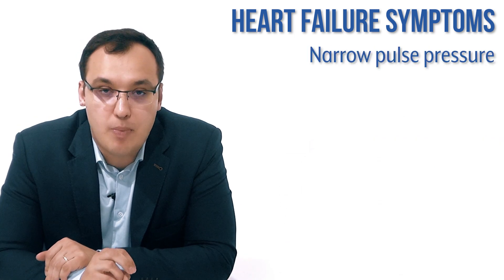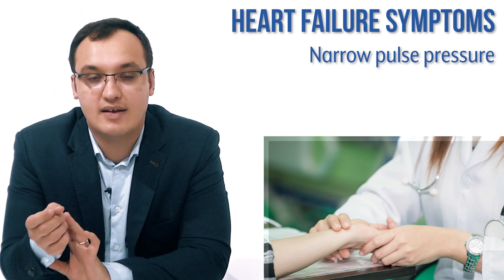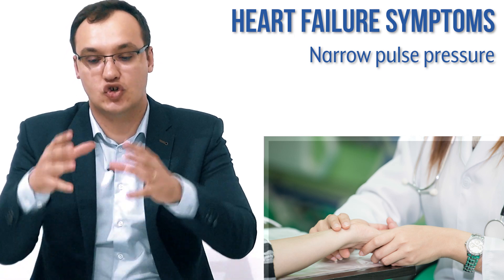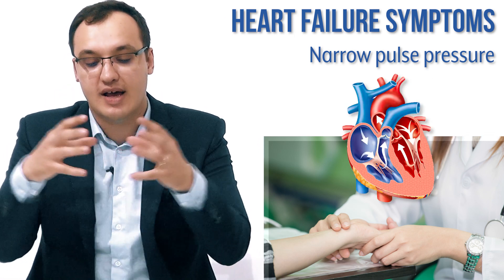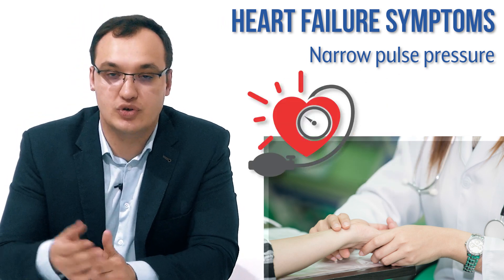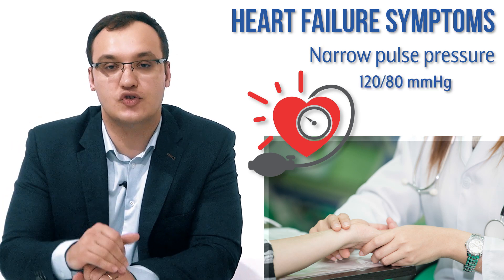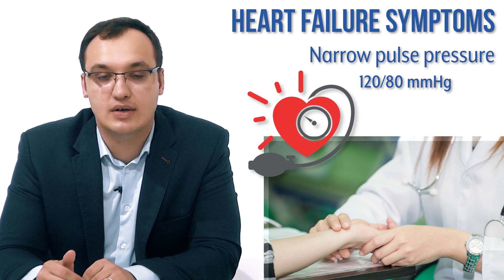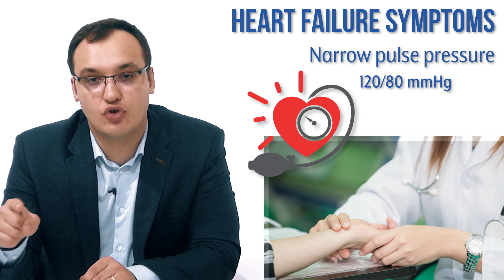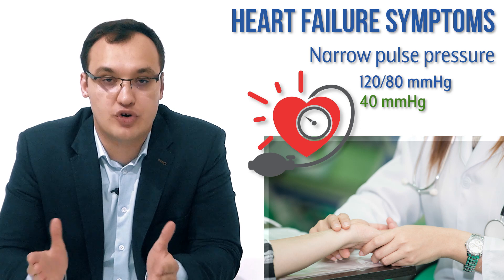What about narrow pulse pressure? This is when we measure the pulse and have a difference between systole and diastole. When the heart contracts that's systole; when relaxed, that's diastole. When we measure blood pressure, we usually say 120 over 80 — 120 systolic and 80 diastolic. The pulse pressure is the difference between these: 120 minus 80 equals 40. So the normal pulse pressure is usually 40 millimeter mercury.